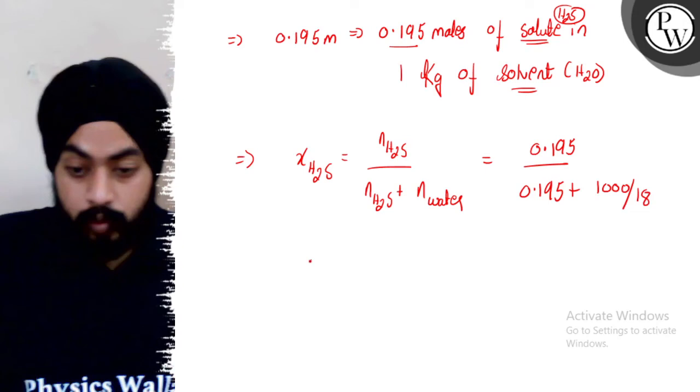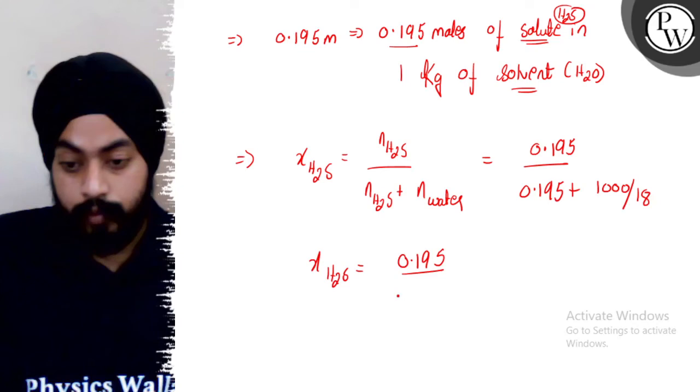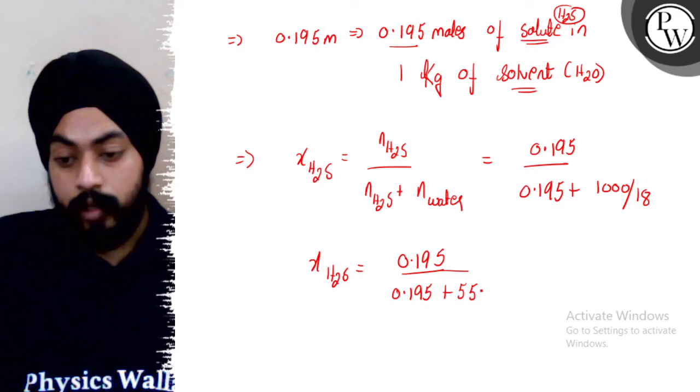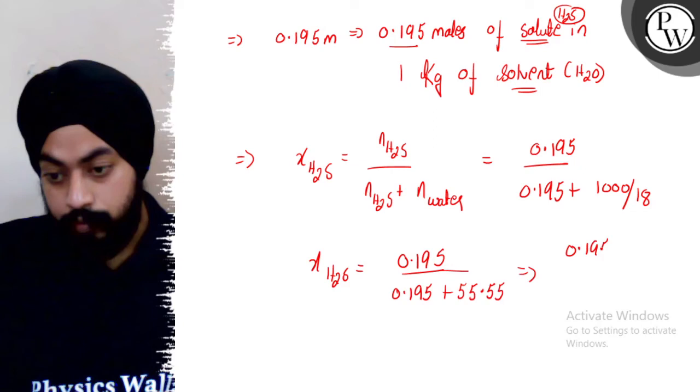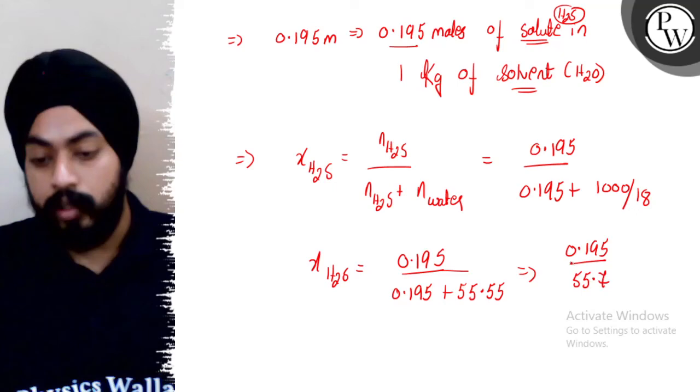It will be 0.195 over 0.195 and 1000 by 18. So now we know that it will be 55.55. So I can say it 0.195 upon 55.7 approximately. So what is it? Mole fraction of H2S.